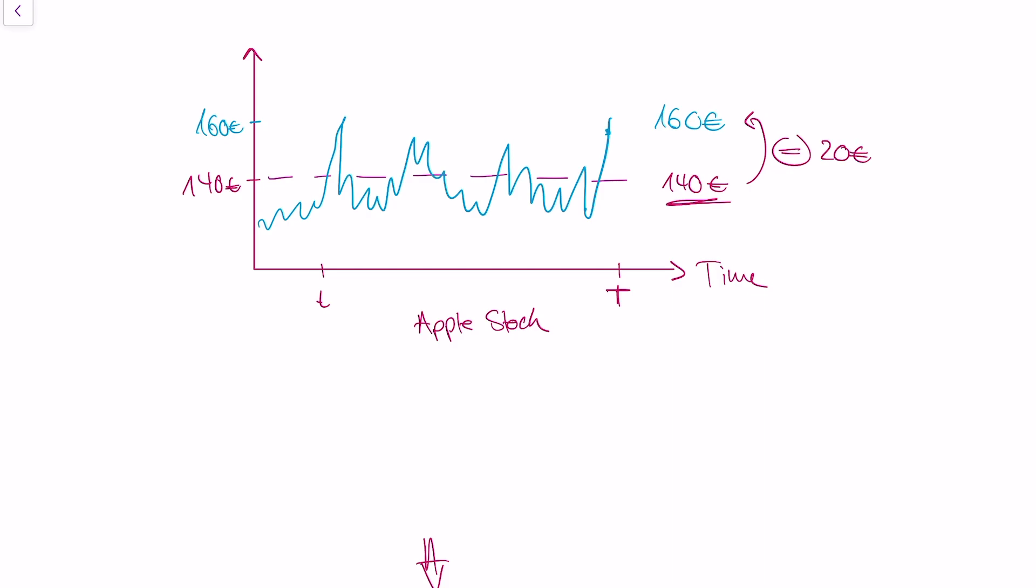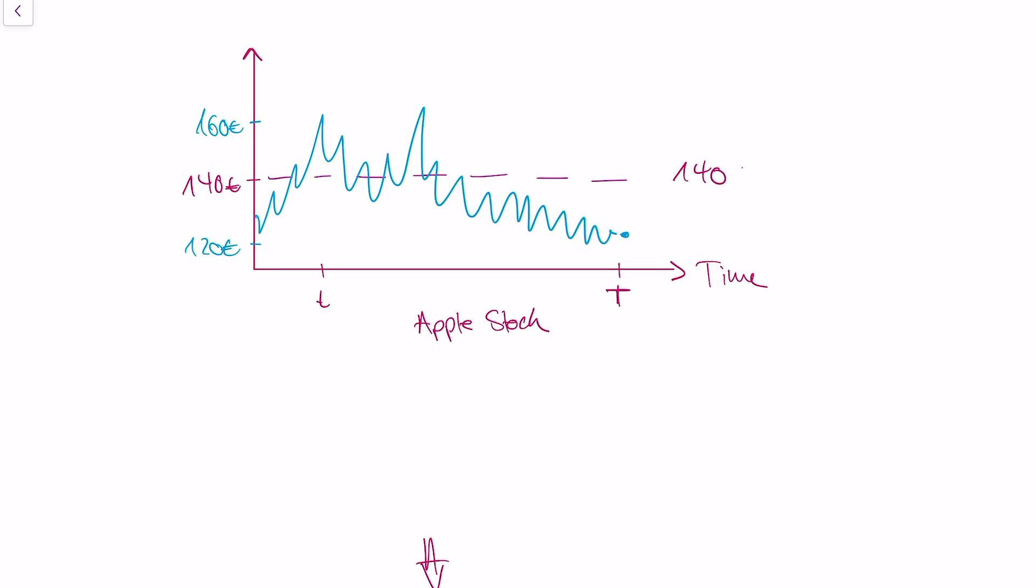But maybe something else happens. Maybe the Apple stock develops differently. Maybe the Apple stock develops like this. So at time T, the worth of the Apple stock is 120 euros. What will you do in this case? Well, in this case, you can buy the Apple stock via your option for 140 euros, but you can buy the Apple stock on the market at 120 euros. In other words, your option is worthless. You will never use the option because you can buy your Apple stock on the market for less money.